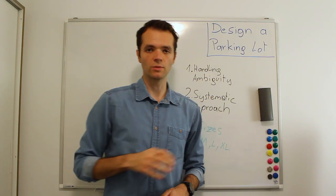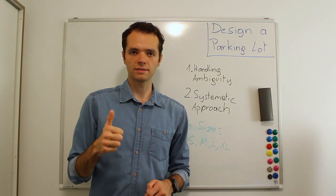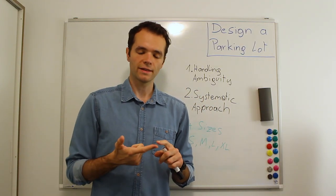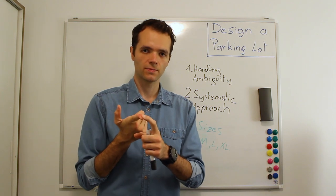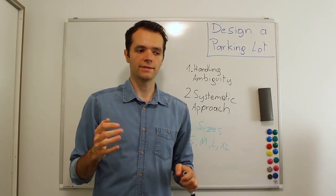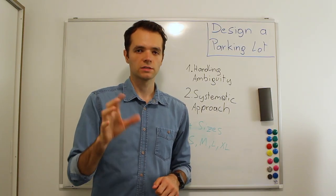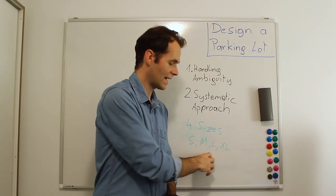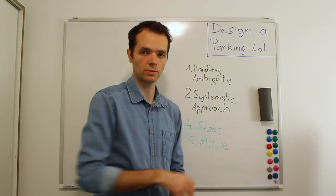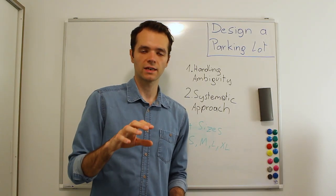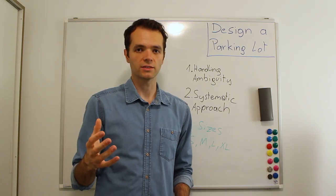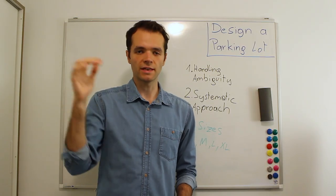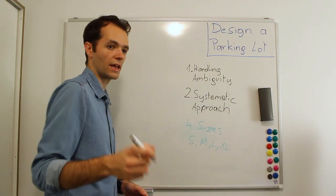Let's think about the key words: we want to represent and design the parking lot system. One class will be the parking lot. We also need to represent the vehicles — cars, motorcycles, buses. Then we need to represent the spot itself. Starting with vehicles: they have a lot of things in common, so this should immediately make you think about an inheritance strategy.